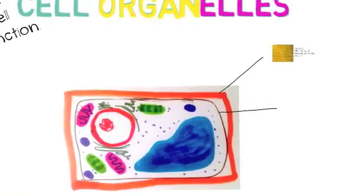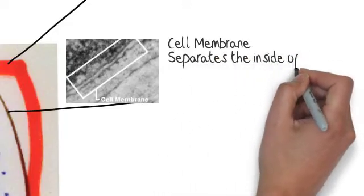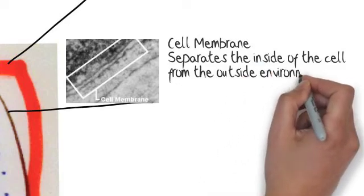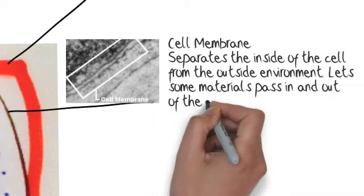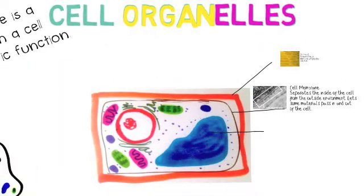The cell membrane is found in both plants and animal cells. You can see it here in this microscope. It's not very thick. The cell membrane separates the inside of the cell from the outside environment. It lets some materials pass in and out of the cell. It's like if the cell was a club, it would be the bouncer. It only allows good things in and gets the bad things out, and it keeps them out as well.